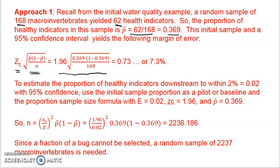Make sure you use the decimals. That is rounded to two decimal places, 0.73 or 7.3%. What that says is that with that sample size of 168, we're going to be accurate in terms of estimating the true proportion of healthy indicators to within about 7%.